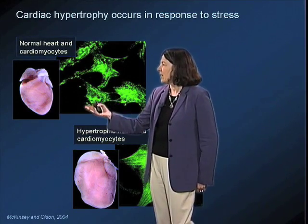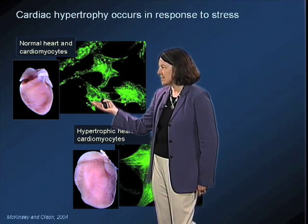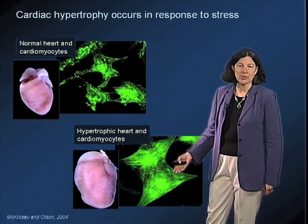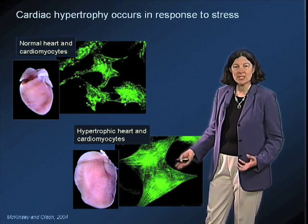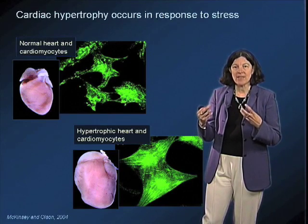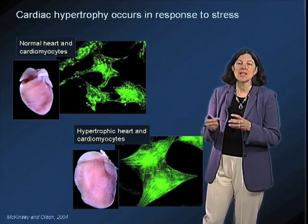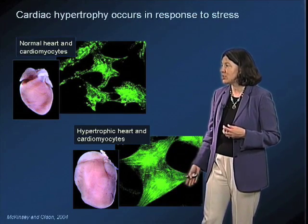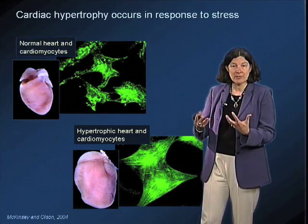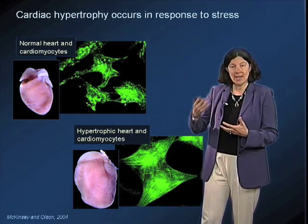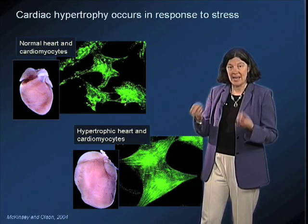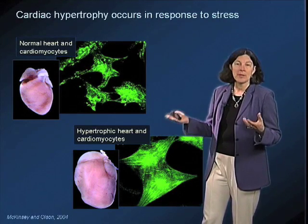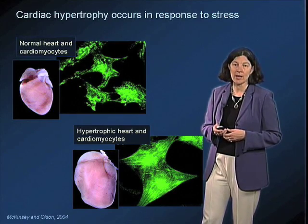Here you can see unstimulated or unstressed cardiomyocytes, and here you can see corresponding cardiomyocytes from a heart that has been put under stress. Those muscle cells are able to sense the increased mechanical load, and that signals them to activate and reactivate the fetal program for gene expression so that they build more contractile machinery. This is initially adaptive and provides a mechanism by which cardiac output can be enhanced to compensate for the increased load on the heart. But at some point it becomes maladaptive and leads to cardiomyopathy.